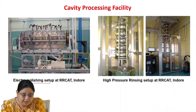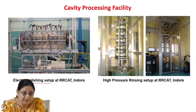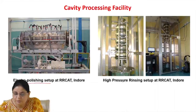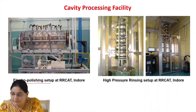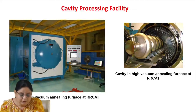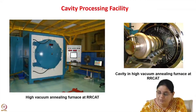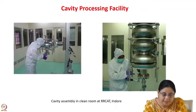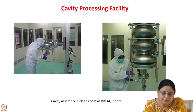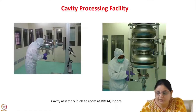Some of the infrastructure is shown in the subsequent slides. We have the electropolishing setup at RRCAT. You can see an elliptical cavity being electropolished and high-pressure water rinsing being used to remove all impurities; this is done inside a clean room. You can see the cavity being rinsed with high pressure using ultrapure water. There is also a vacuum annealing furnace where the cavity is baked to get rid of trapped impurities. Cavity assembly is generally done in class 100 or class 10 clean rooms by specialized, trained staff.